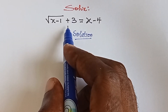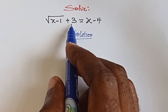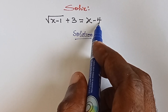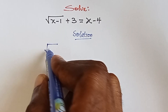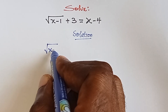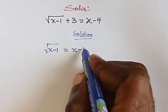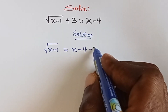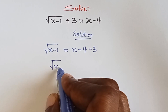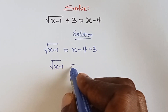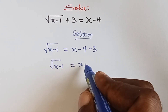We are going to move this plus three to the other side because it's a constant, to join this minus four. Then it becomes: square root of x minus one equals x minus four minus three, which gives us square root of x minus one equals x minus seven.